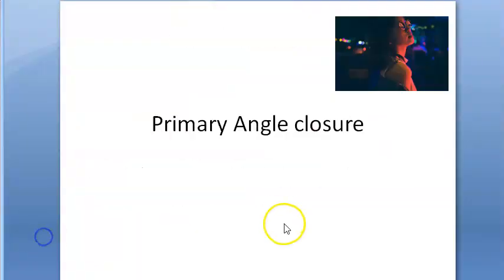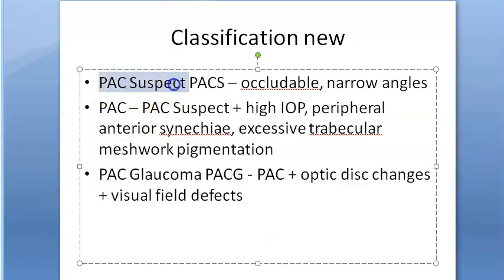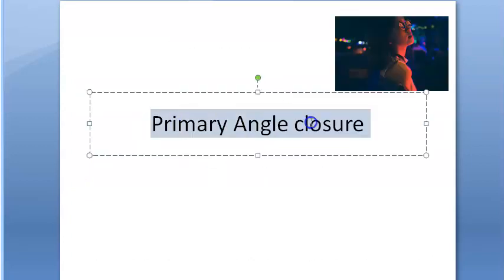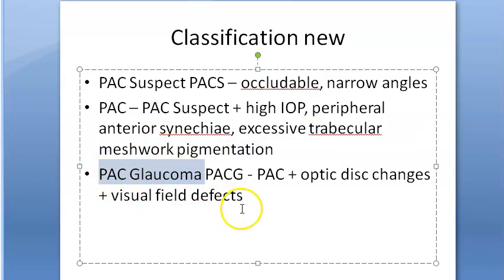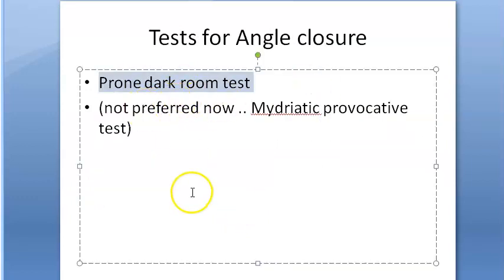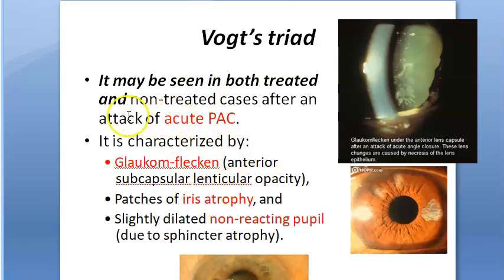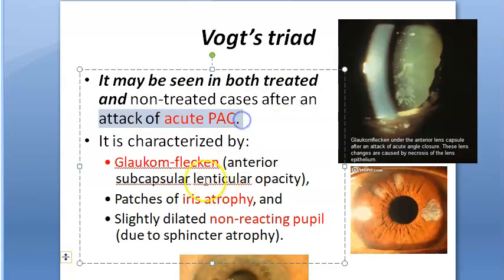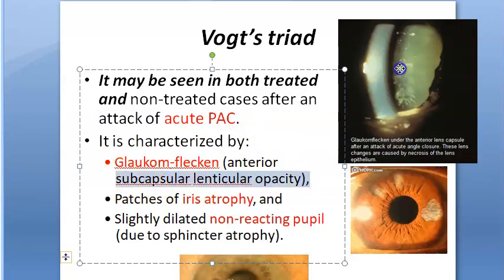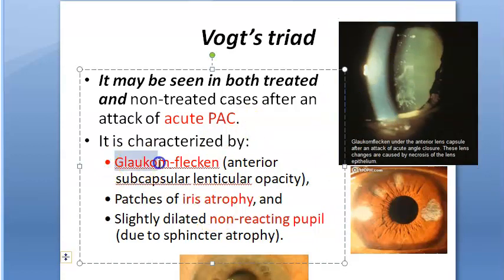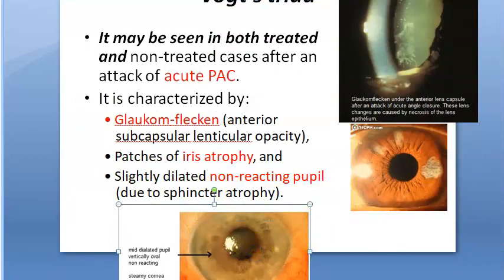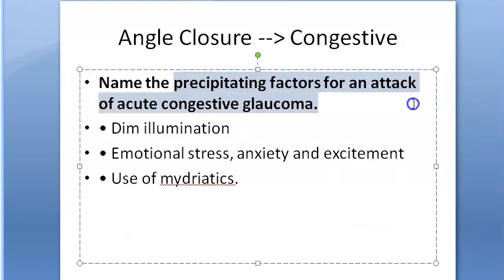Primary angle-closure glaucoma classification: primary angle-closure suspect, primary angle closure (with high IOP), and primary angle-closure glaucoma. Voss triad (after an acute attack): glaucoma flecken (anterior subcapsular lenticular opacity), iris atrophy, and non-reacting slightly dilated pupil. Precipitating factors for acute congestive glaucoma attack: dim illumination, emotional stress, anxiety, excitement, and use of mydriatics.